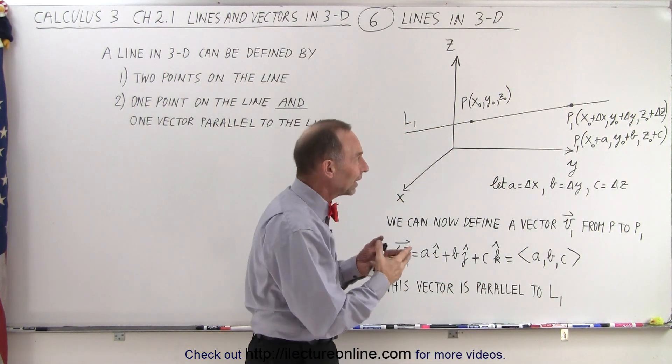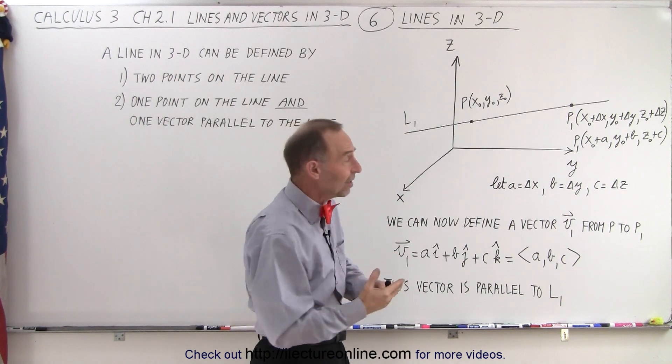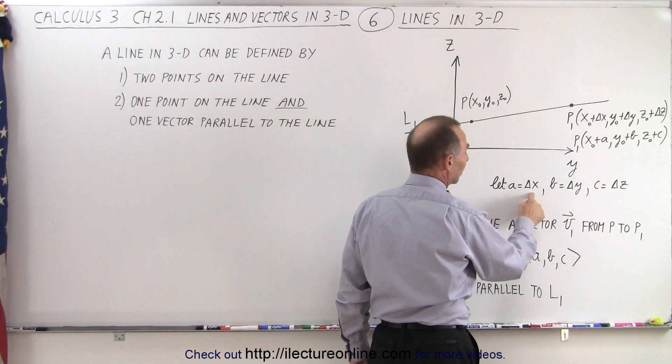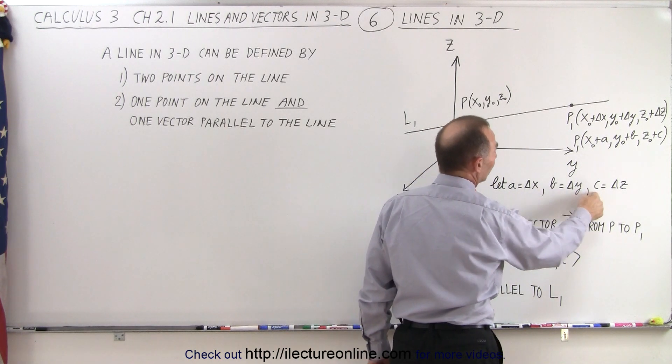It is customary to replace delta x, delta y, delta z by three numbers represented by a, b, and c. So let a equal delta x, b equal delta y, and c equal delta z.